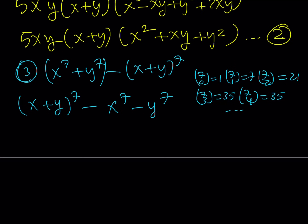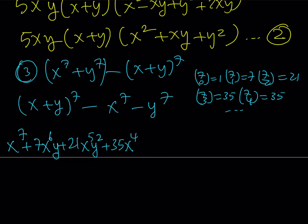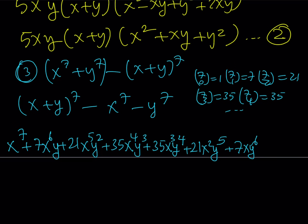Expanding x plus y to the 7th: x to the 7th plus 7x to the 6th y plus 21x to the 5th y squared plus 35x to the 4th y cubed plus 35x cubed y to the 4th plus 21x squared y to the 5th plus 7xy to the 6th plus y to the 7th. Then subtracting x to the 7th and y to the 7th — those terms cancel — and we're left with a large expression.